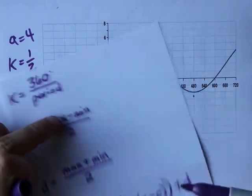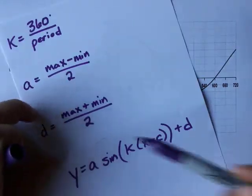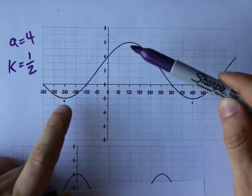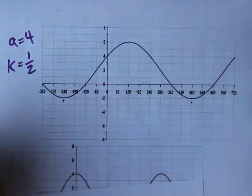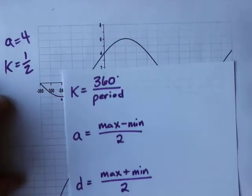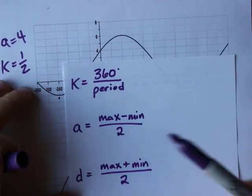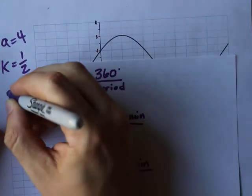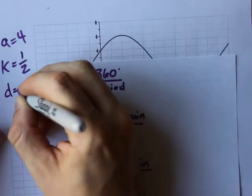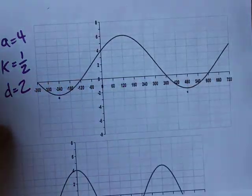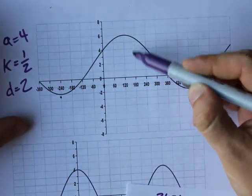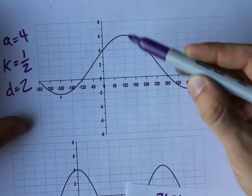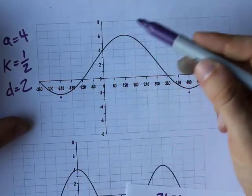The vertical shift, the D value, is the average of the max and min. You take 6 and negative 2, add them together, and divide by 2. 6 plus negative 2 is 4, divided by 2 is positive 2. That's the vertical middle of the graph — you go 4 above it and 4 below it to get to your max and min.